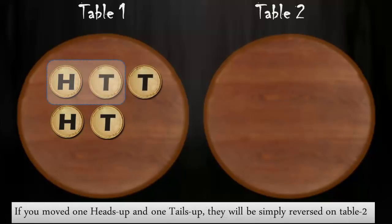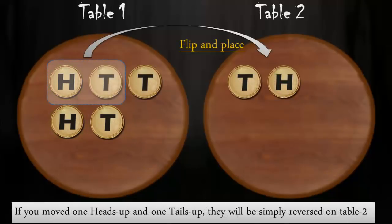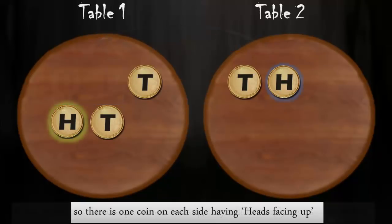And if you move one heads up coin and one tails up coin, they will simply be reversed on table 2. So, there is one coin on each table with heads facing up.